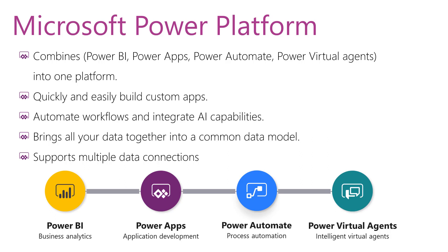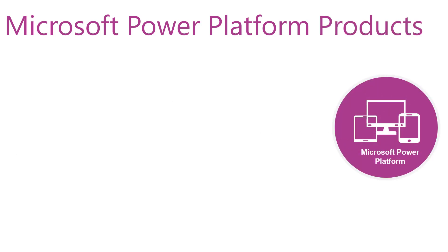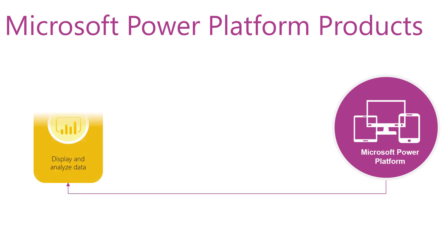This is the Power Platform, and as we said, it consists of four products: Power BI, Power Apps, Power Automate, and Power Virtual Agents. Let's define these products. Starting with Power BI: Power BI combines data gathering, data storage, and knowledge management with analysis to evaluate information presentation for planners and decision makers.